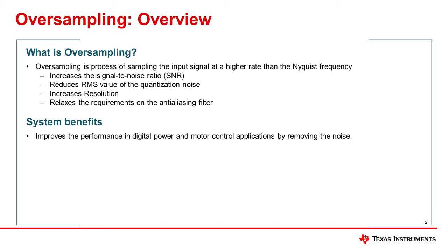Oversampling also simplifies the requirements on the anti-aliasing filter. Aliasing is an undesirable effect that occurs when the sampling frequency is not at least twice the highest component frequency of the signal. The result of aliasing is that the original analog signal cannot be fully reconstructed from the input samples. Therefore, for many applications, a low-pass filter is required at the ADC input to filter frequencies lower than half of the sampling frequency. It is more difficult to handle the filter constraints with low sampling frequencies.